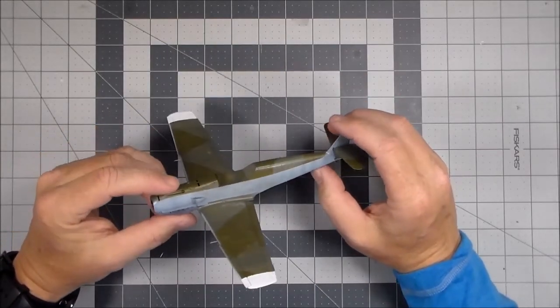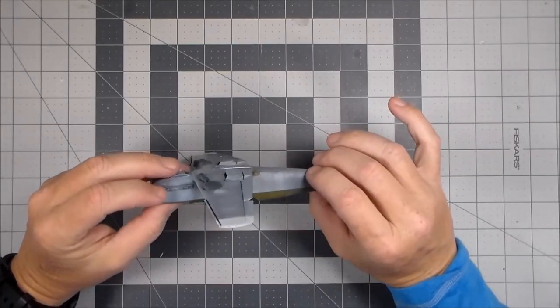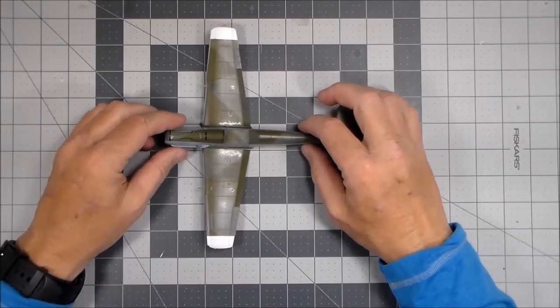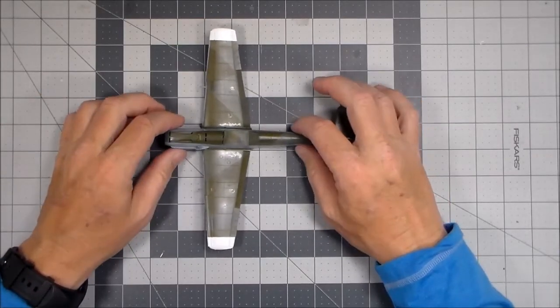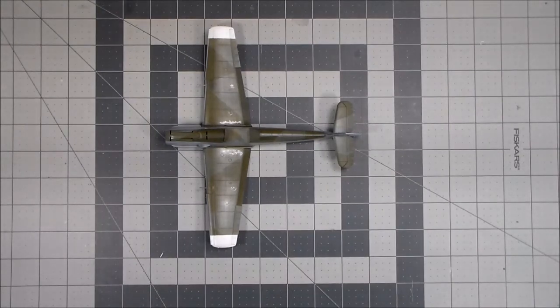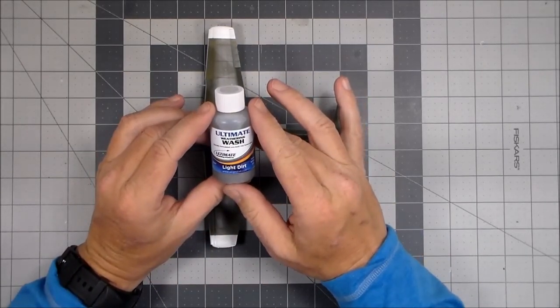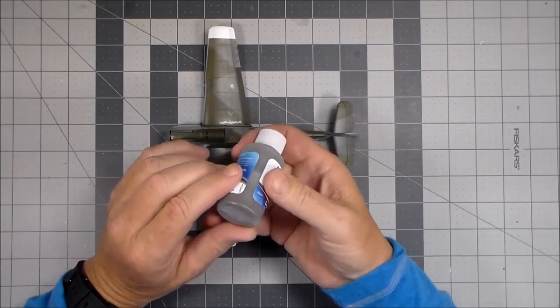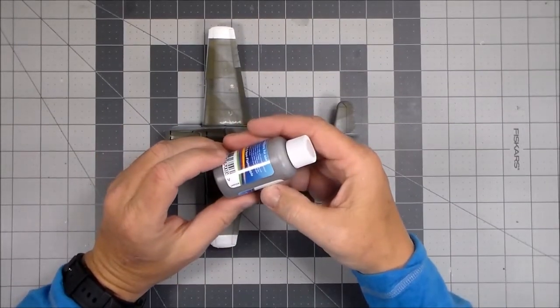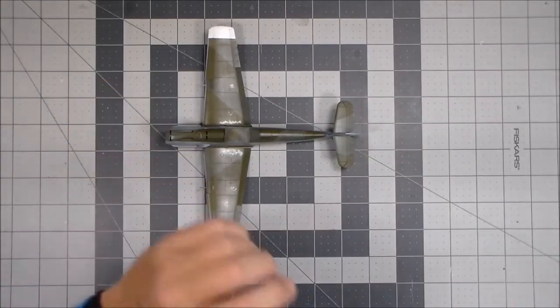Like I say, I got the gloss on here. I'm ready to do some decals, and once I put the decals on, I think I'm going to put another nice heavy coat of gloss on it so I can start weathering. Because I am going to be using for the first time some of the Ultimate Weathering Wash. I'm going to check the colors and make sure that there are colors that will be appropriate for this, but this is supposed to be some pretty good stuff.